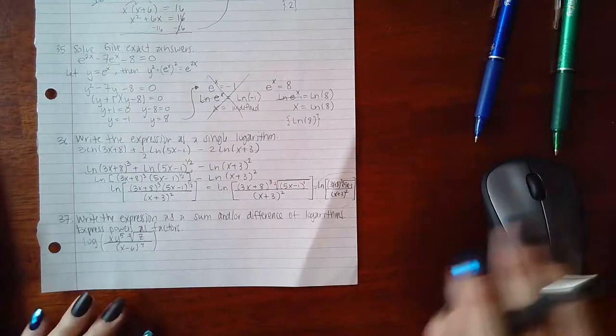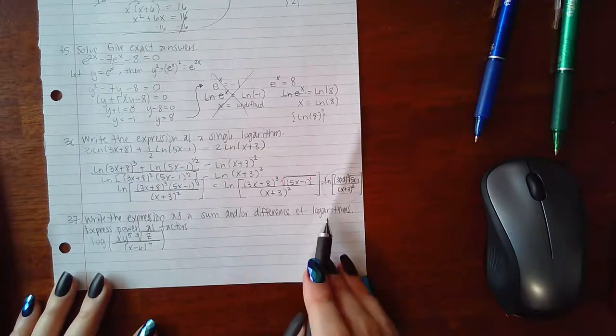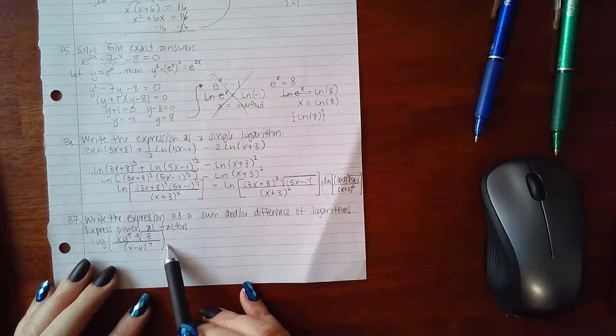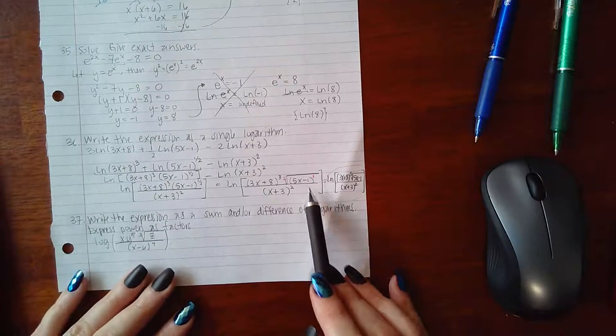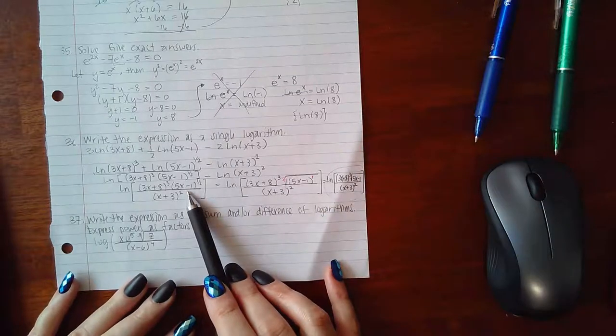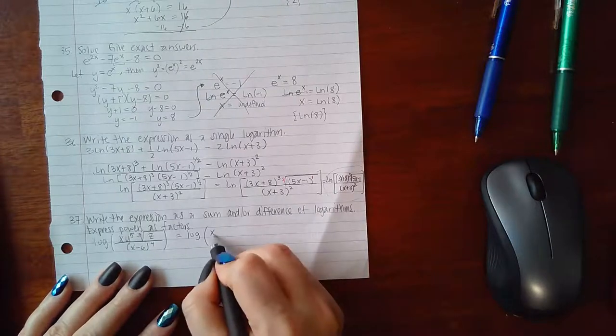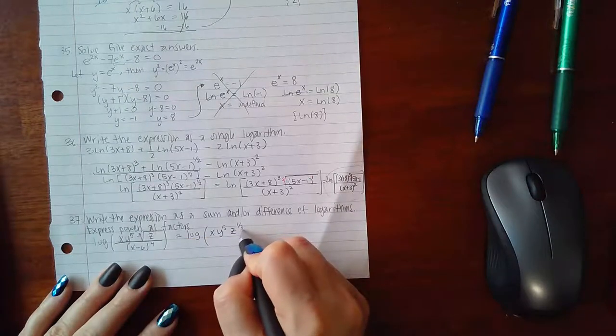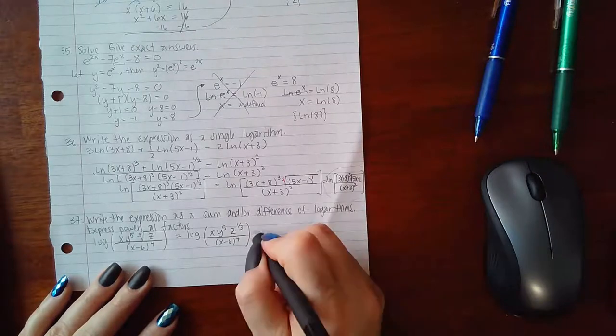In number 37, it's asking us to write the expression as a sum and/or difference of logarithms. Powers as factors. Here we're going to start tearing everything apart. The first thing you want to do is kind of like the opposite of what we did before. The first thing we needed to do was change our radicals to exponent forms. So I have a radical here, I want to change that to an exponential. So x, y to the fifth, and then this would be z to the 1 over 3, and then (x minus 6) to the fourth power.